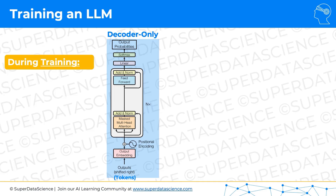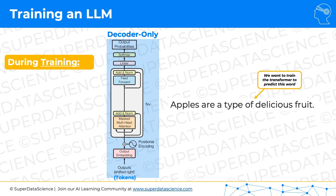Here's our decoder-only architecture. Here's a quick note on the left to remind us that we're talking about training, not inference in this case. And here's a sentence that we're putting into the transformer. We wanted to learn about this next word 'of' — so we wanted to learn that in this particular sentence in the English language, after the first four words 'apples are a type', the next word is 'of'.